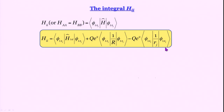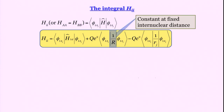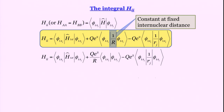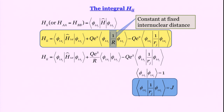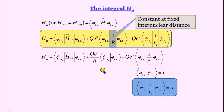For the second term in H_ii, 1/R is a constant and comes out; inside we have the integral of phi_1s_i times phi_1s_i, which equals 1 for normalized orbitals, giving q_e-squared divided by capital R. The third term is minus q_e-squared times the integral of phi_1s_i squared divided by r_j. This is called the Coulomb integral, denoted J. So H_ii equals E_1s plus q_e-squared over R minus q_e-squared times J.